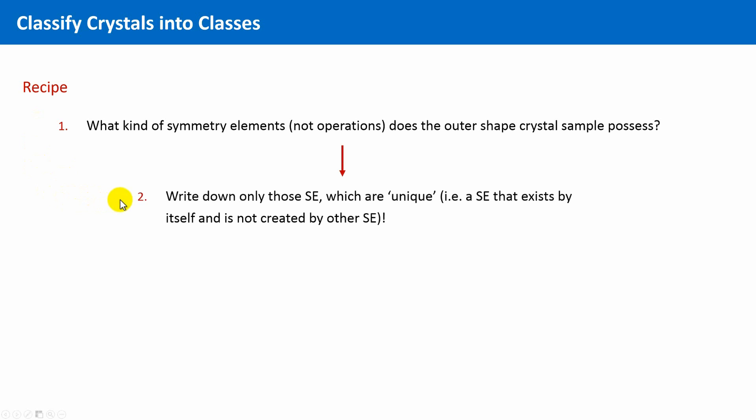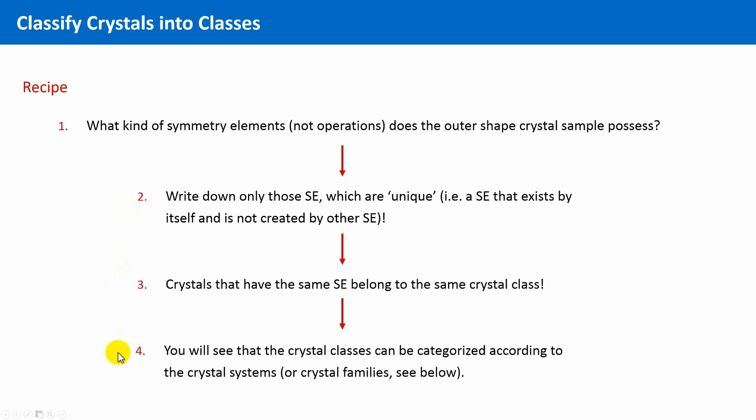Second, we write down all unique symmetry elements. These are all symmetry elements which constitute a symmetry element of their own, meaning they were not generated by other symmetry elements. Third, every crystal that has the same symmetry elements which we just determined belongs to the same crystal class. Fourth, you will see that these crystal classes can be further categorized according to their crystal system.